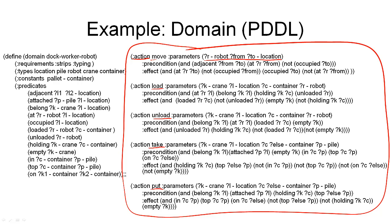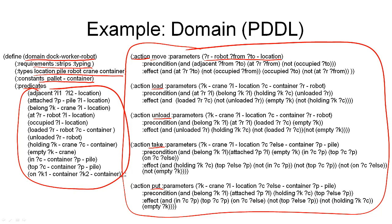In addition to the operators, the PDDL language allows us to define a few other things. We can say that a domain has a name so that we can refer to it in planning problems. We can specify requirements, which allows the language to be extensible. We can specify types — locations, piles, robots, cranes, and containers. In this domain specification, we also have one constant defined, which is the pallet, as it will occur in every planning problem. Then we have the predicates defined for the dock worker robot domain, with the types of the arguments. That is the definition of this domain.